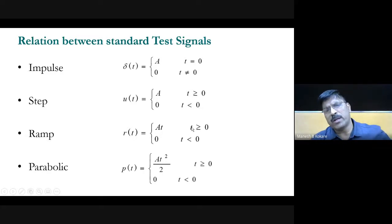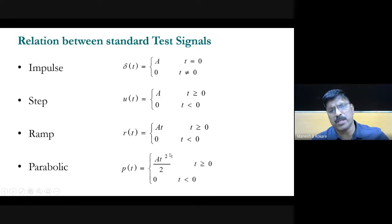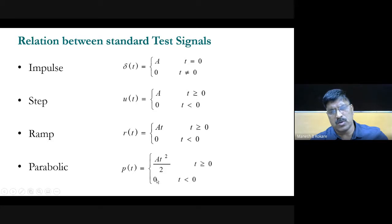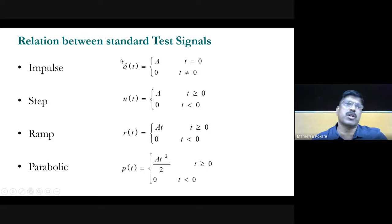The ramp signal and parabolic signal: parabolic is given by p(t) = a·t²/2 for t ≥ 0, otherwise zero. When a = 1 it is called unit step input, when a = 1 for ramp it is unit ramp input, and when a = 1 for parabolic it is unit parabolic signal.